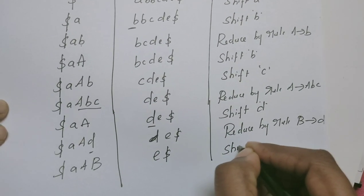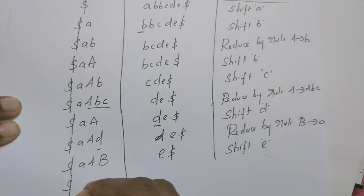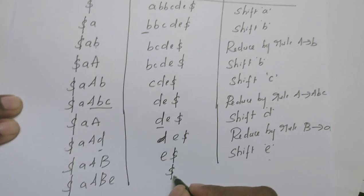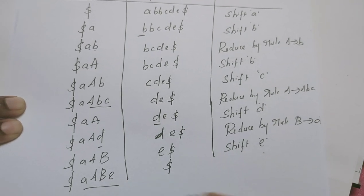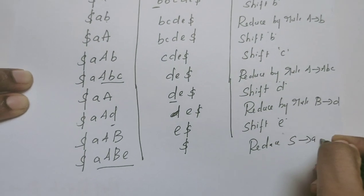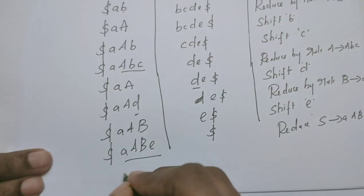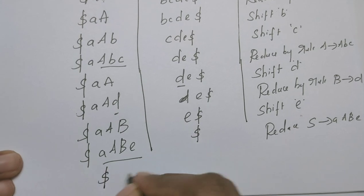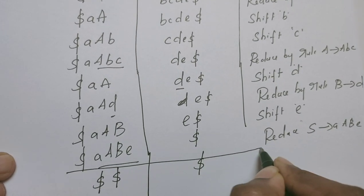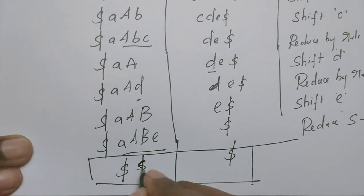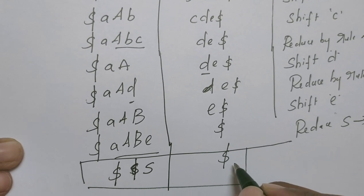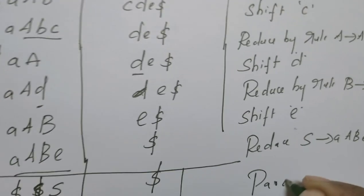Next action is shift — shift E. Stack contains dollar, A, A, B, E. Input buffer is now empty — it has reached the end of the input string. Now this entire A, A, B, E can be reduced to S. Reduce by the rule S derives A, A, B, E. The stack now contains dollar, S. When the stack contains the start symbol and the input buffer is empty, parsing is successful.